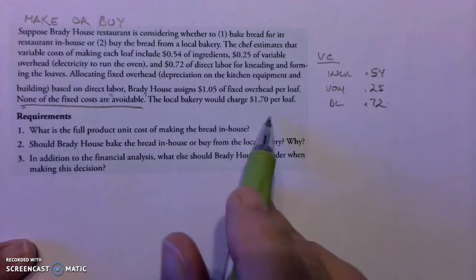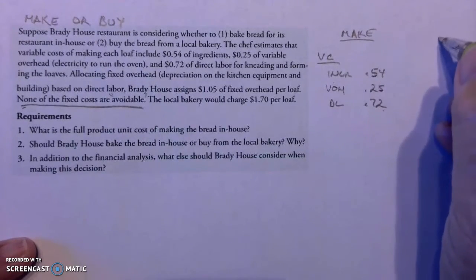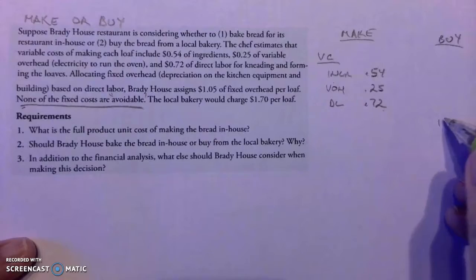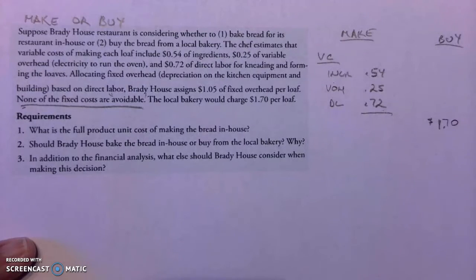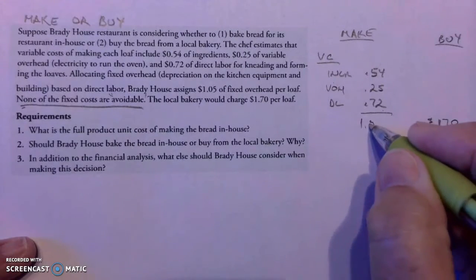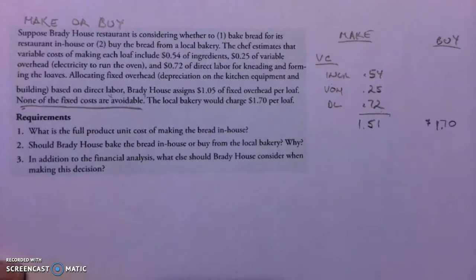The local bakery charges $1.70 per loaf to buy. If we make it in-house, the variable cost is $0.54 plus $0.25 plus $0.72, which comes to $1.51. So it's $1.51 to make it versus $1.70 to buy it.